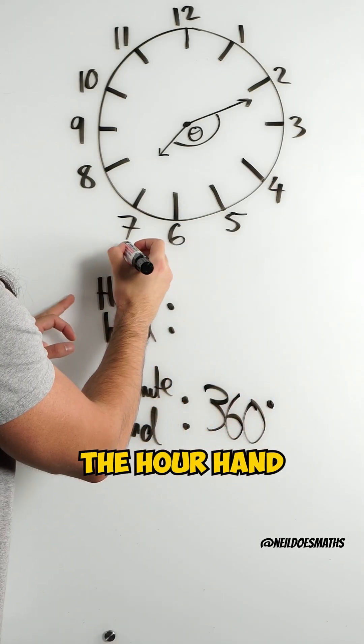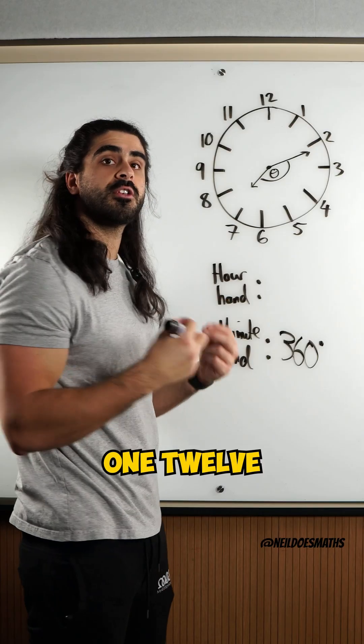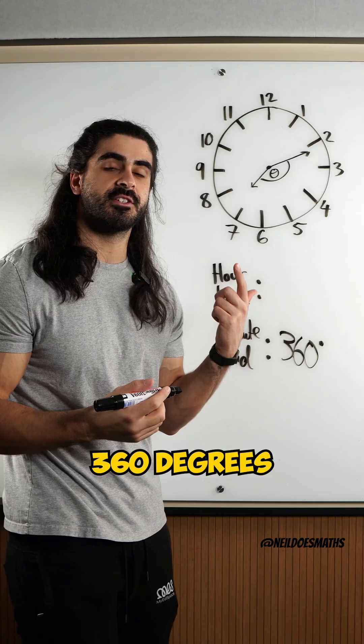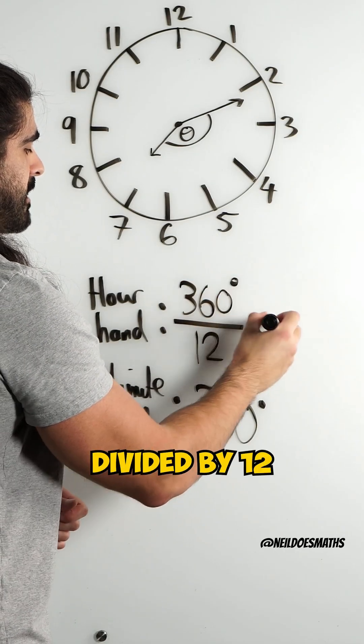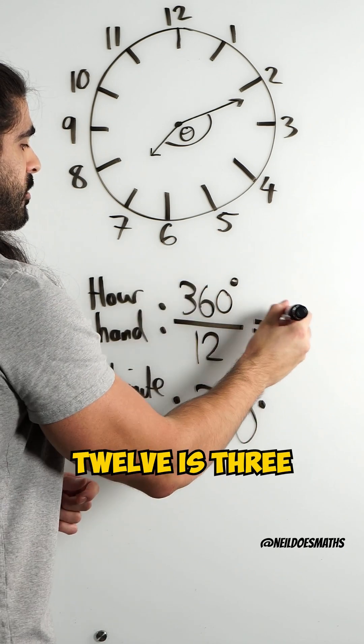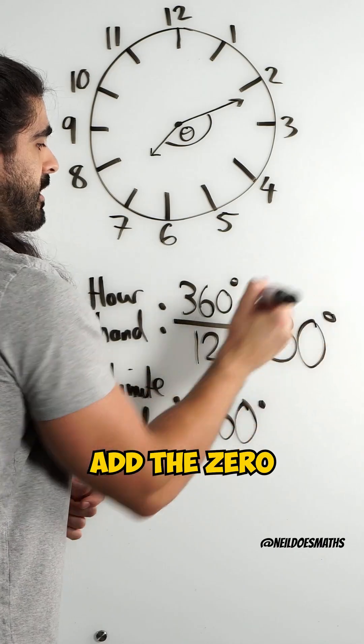However, the hour hand is only doing 1/12th of the full 360 degrees. So, to calculate the angle it's moving, we have to do 360 divided by 12, which 36 divided by 12 is 3. Add the 0, 30 degrees.